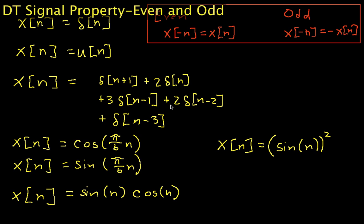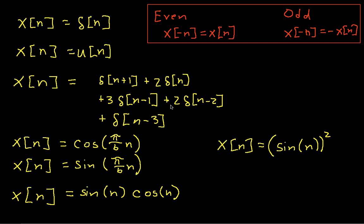Welcome to this video in which we will examine the properties of evenness and oddness for discrete time signals. We'll do this by going through seven different examples, and hopefully by the time we're done you'll understand the concept. Up here on the right I've shown the mathematical definition of even and odd. Our goal is to go through each of the signals listed in yellow and determine if each is even, odd, or neither.